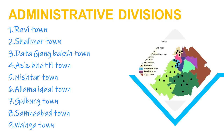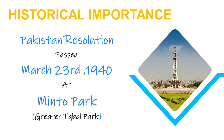Now we will see the administrative divisions of Lahore. Lahore is divided into nine towns to ease its administration, as it is a large city. The nine towns are: number one, Ravi Town; number two, Shalimar Town; number three, Data Ganj Bakhsh Town; number four, Aziz Bhatti Town; number five, Nishtar Town; number six, Allama Iqbal Town; number seven, Gulberg Town; number eight, Samanabad Town; and number nine, Wahga Town.